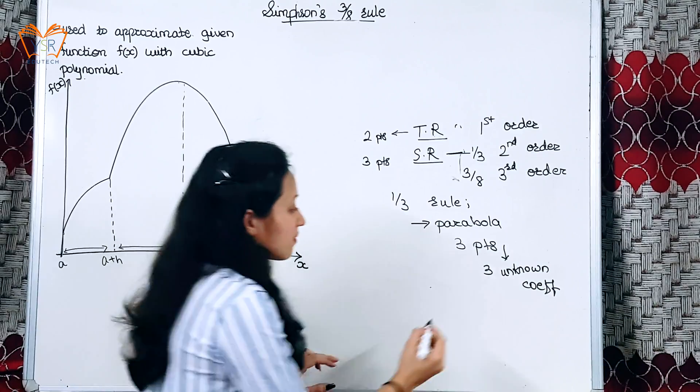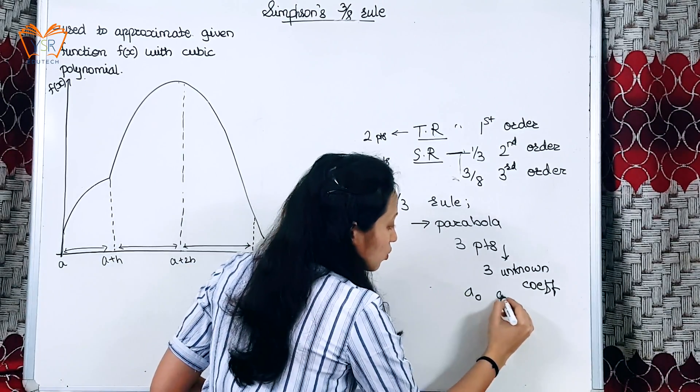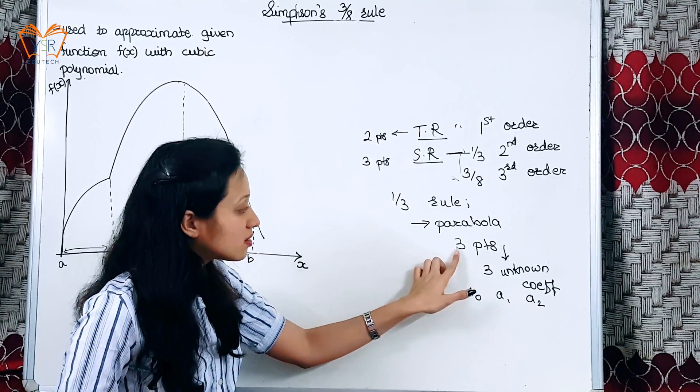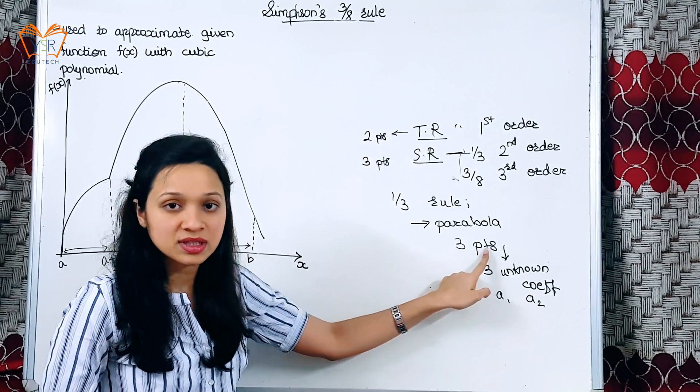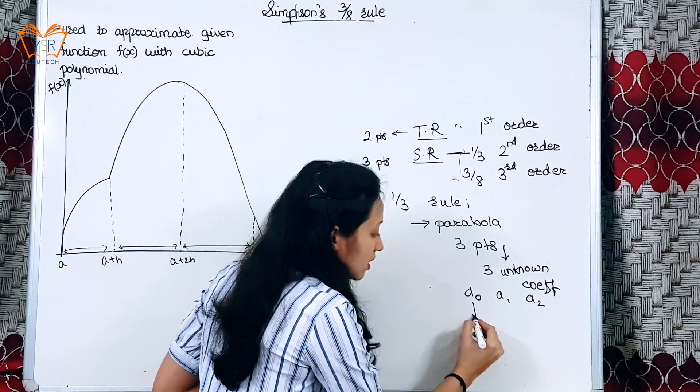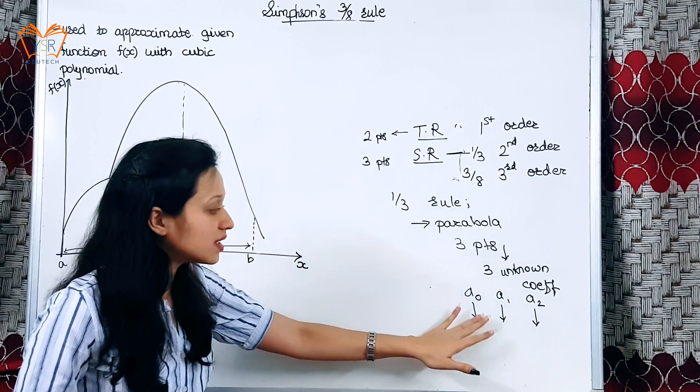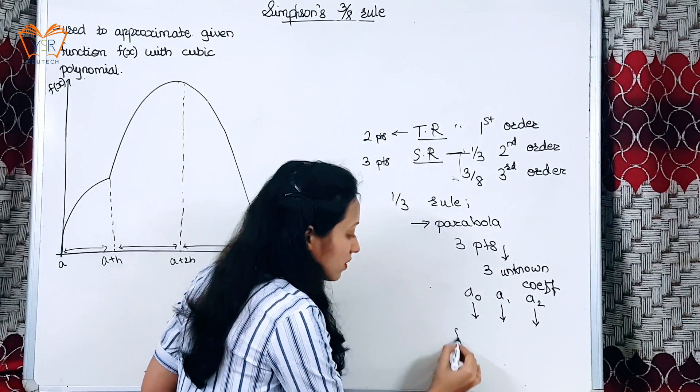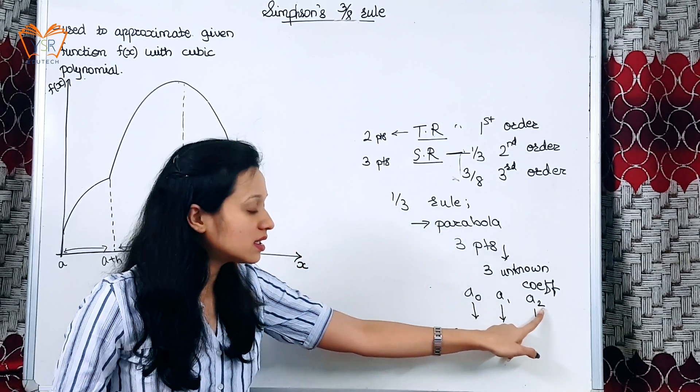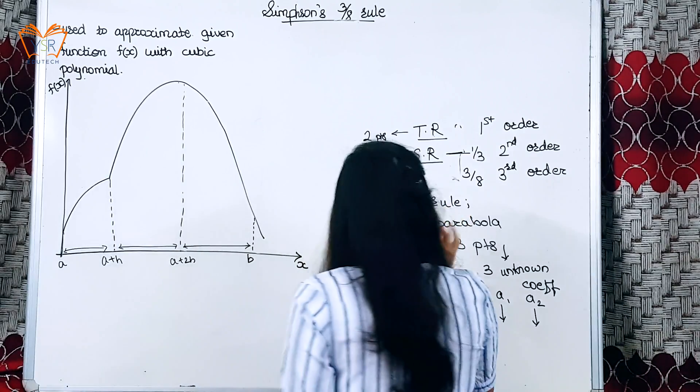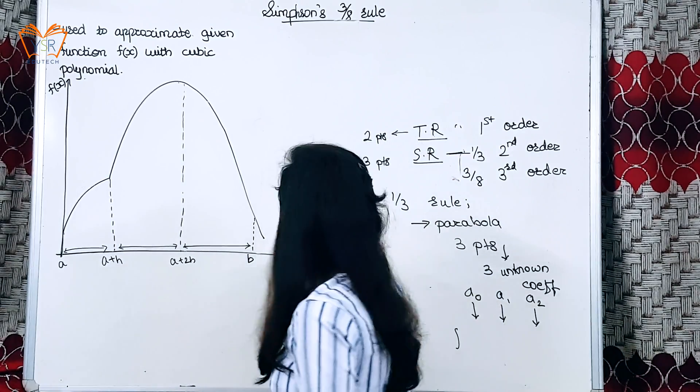To find out the values of these three unknown coefficients, we found the value of function at these three points, and using this we got the value of A0, A1, and A2. And then we substituted the value of limits and these three coefficients in the equation and we got the final formula for one-third rule.